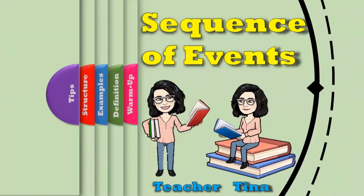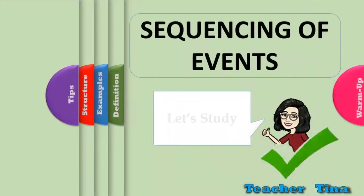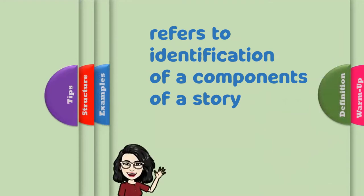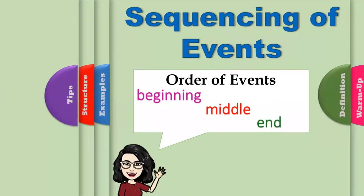Sequencing of events refers to the identification of components of a story as things and events happen in order — that is, the beginning, middle, and end. To put it simply, when things or events happen in an order, they form a sequence.